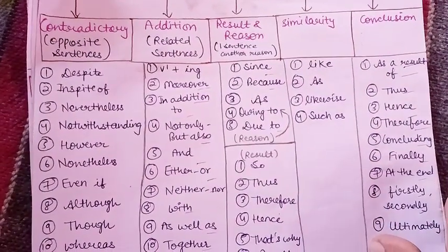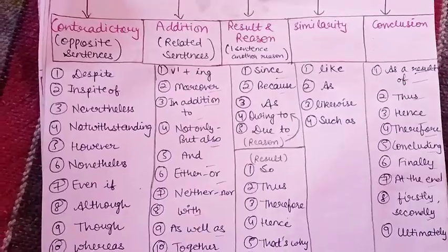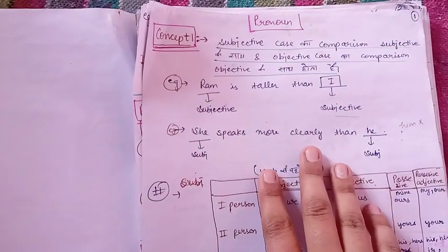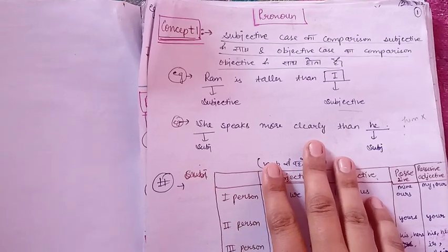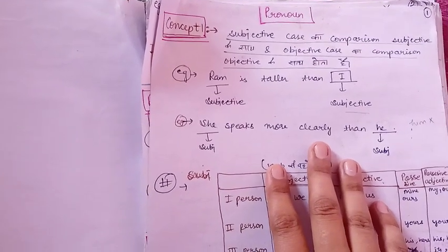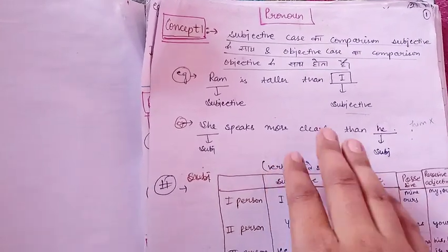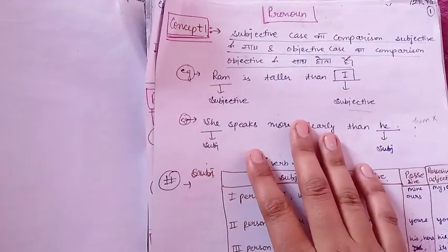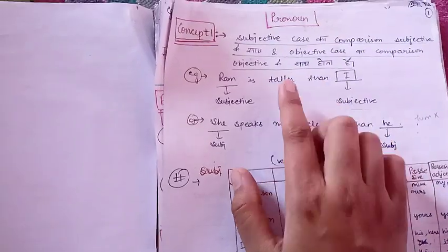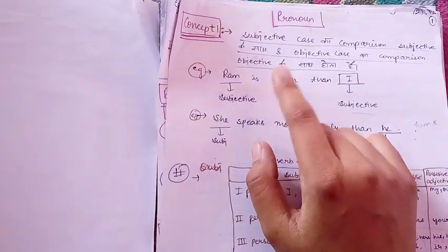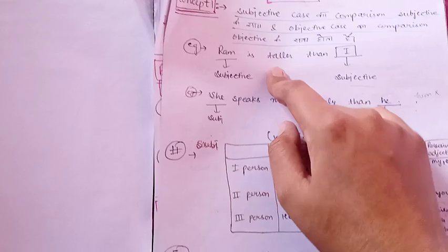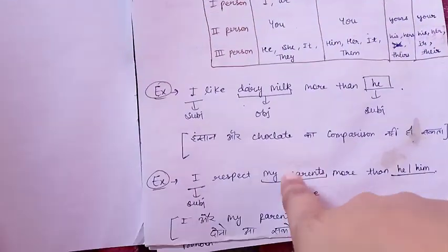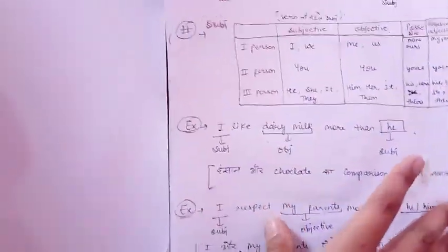Moving on, the next topic is pronouns. These notes are not in very good condition as I have not used them for three to four months. These are the notes for pronouns — as you can see I have written the concept, the rule, and after that an example sentence. Then there is a table for first, second, and third person with example sentences.